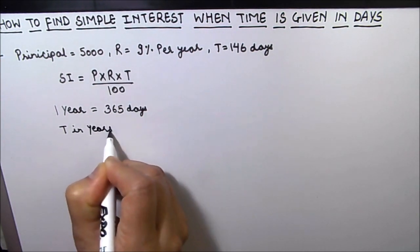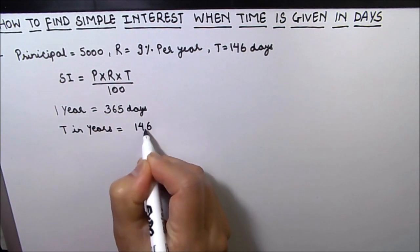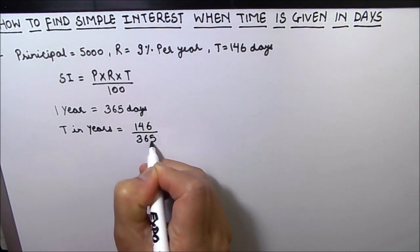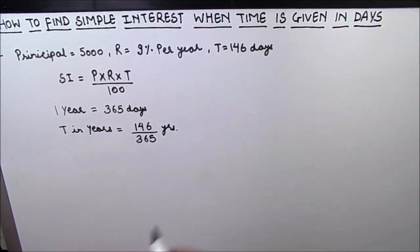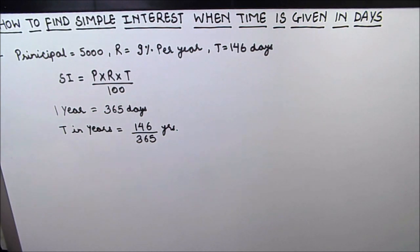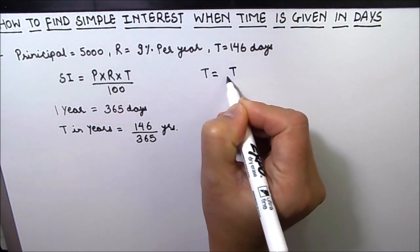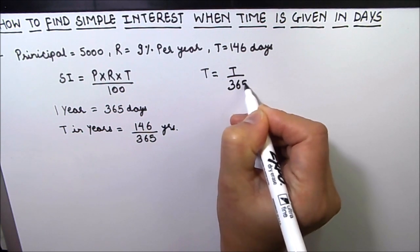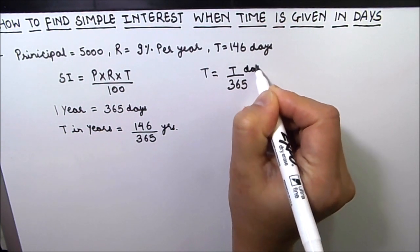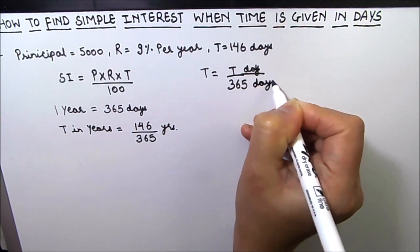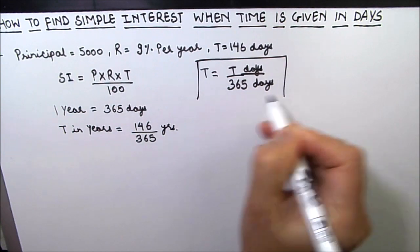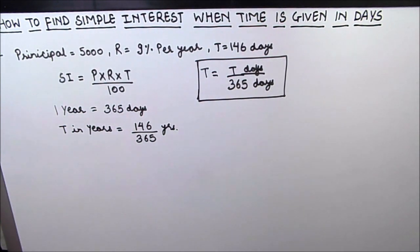So the time period in years will be equal to 146 divided by 365 years. Whenever time period is given in days, we simply divide it by 365 — the number of days in a year. So time in years equals time in days divided by 365. This is the change we need to make before putting values into the formula.